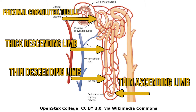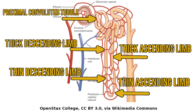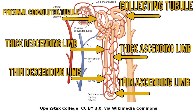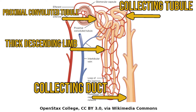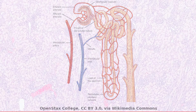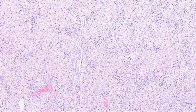Although the thin descending and thin ascending limbs have different names, histologically they look very similar, so we won't be able to tell them apart, but we'll be able to distinguish thin from thick limbs. The thin ascending limb then becomes the thick ascending limb, which connects to the distal convoluted tubule and has a very similar histologic appearance. The last two tubes are the collecting tubule and the collecting duct, which is a coalescence of collecting tubules that empties into the renal pelvis. Now let's go and find all of those structures histologically.